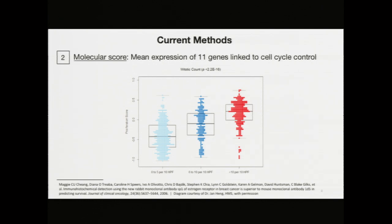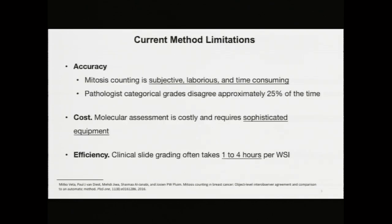The second method for assessing tumor proliferation is molecular in nature, and it rests on a mean RNA expression over 11 gene factors that correspond to tumor growth and spread. You can see in this chart the correlation between the categorical and molecular scores for assessing tumor proliferation. Current methods, however, are limited in their accuracy, their cost, and their efficiency.